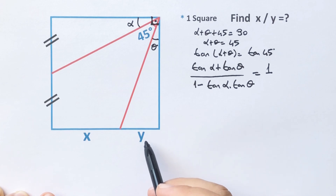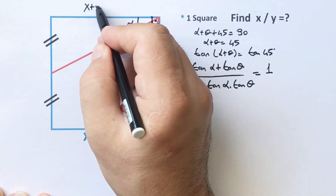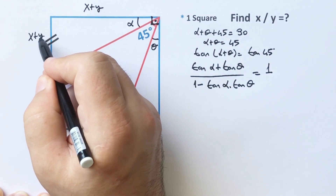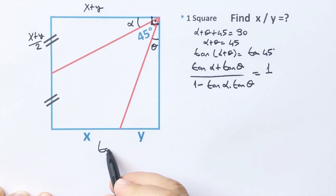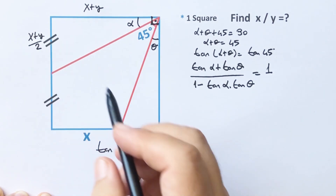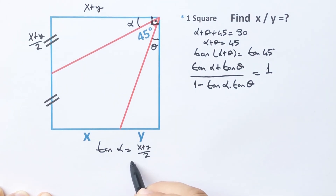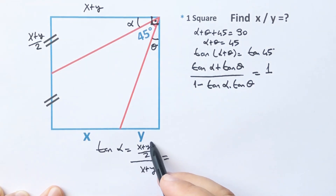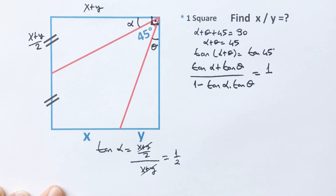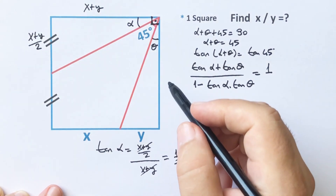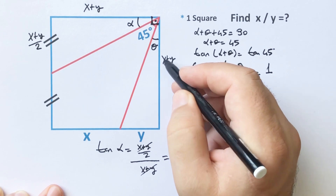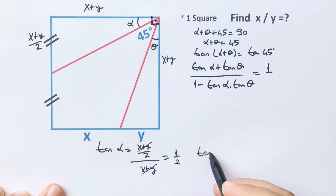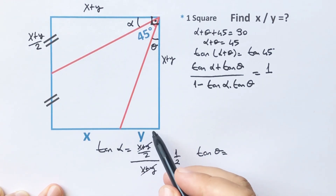Let's calculate tangent(alpha). Here is also x plus y, and this length is (x + y) over 2, so tangent(alpha) equals (x + y)/2 over (x + y), therefore tangent(alpha) equals one half. Now let's calculate tangent(theta): tangent(theta) equals y over (x + y), since this length is also x + y.